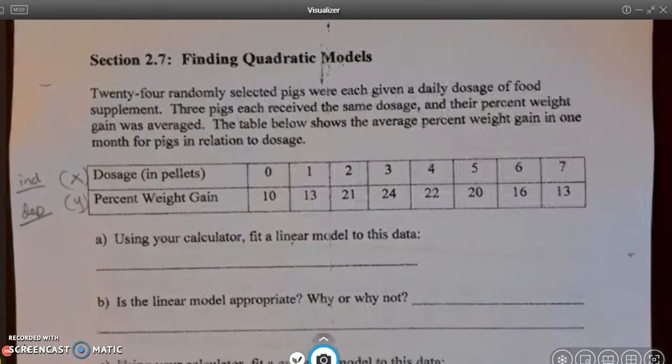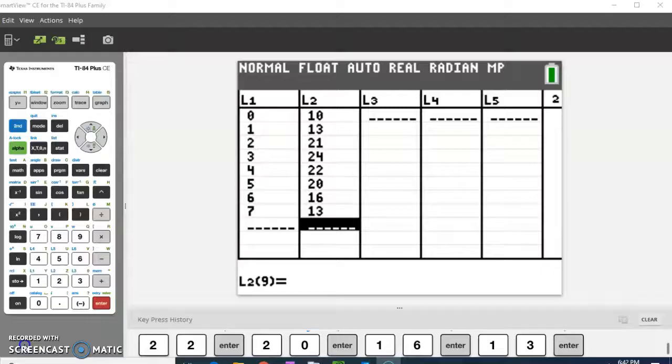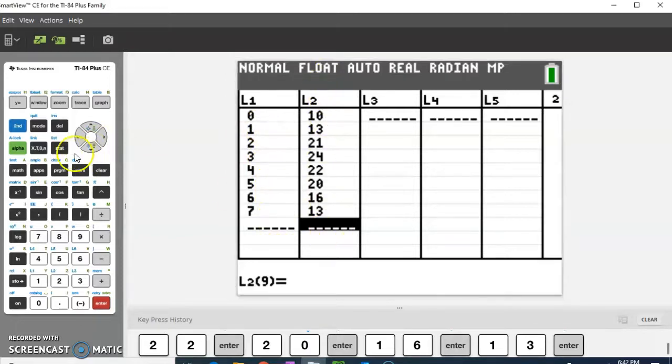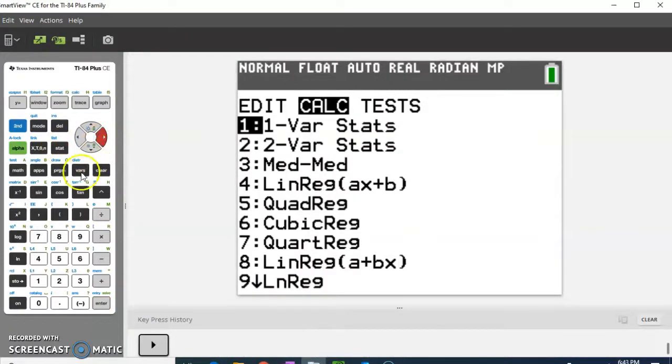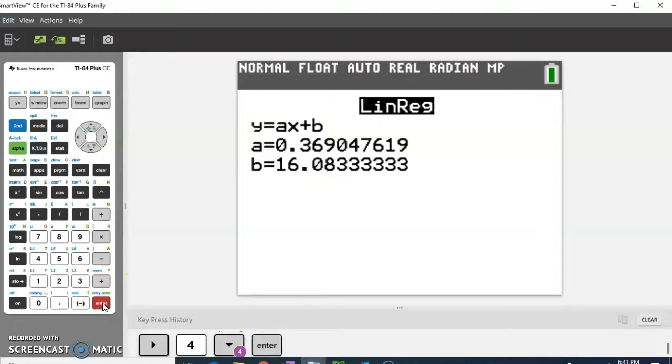Okay, so the first thing we're asked to do is, using your calculator, fit a linear model to this data. So what I did was I went to my calculator, and I went to stat and edit, and I entered L1. I put my X values, and in L2, I put my Y values, and then I'm going to go to stat. And I'm going to go to calc, and I'll choose linear regression, and I'll calculate that line, and I'm going to write that down as the equation for my line.